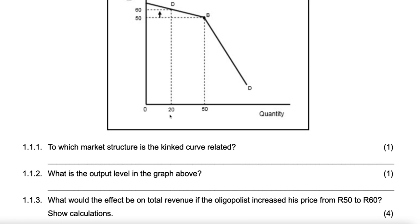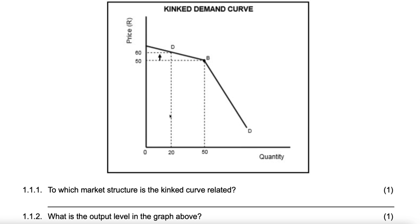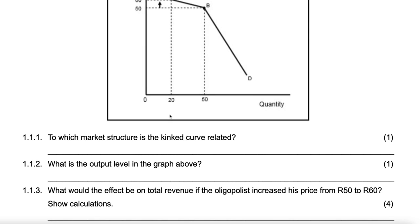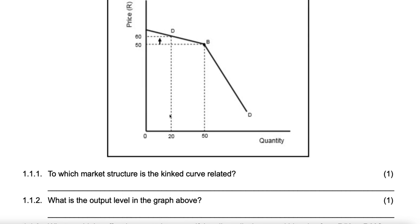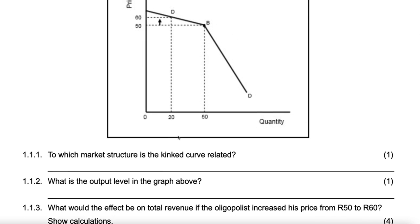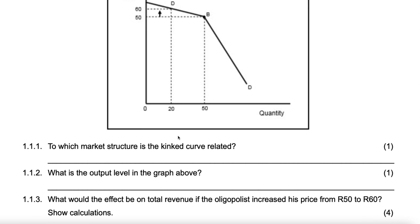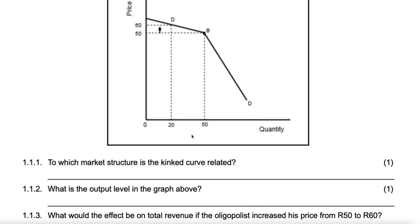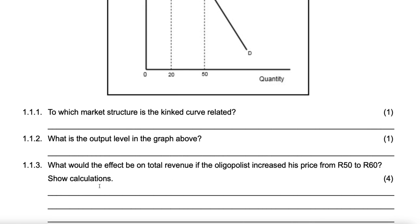The first question is: to which market structure is the kinked demand curve related? That would be oligopoly. Number two: what is the output level in the graph above? The output is 50 units.